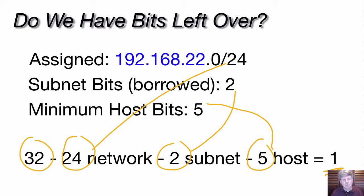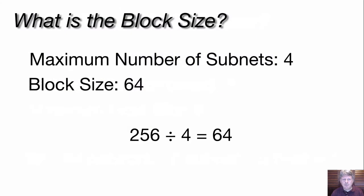Normally, we make that decision based on our ability to scale the network. We're going to use three of the possible four subnets, so we can add one more network. We're also going to use up to 22 of the 30 valid hosts, so we can add eight more hosts. The plans of the business will tell us whether to use that extra bit for more networks or bigger networks. For us, we're going to keep it with four subnets, and that's how we're going to move forward.